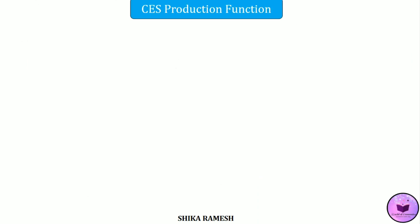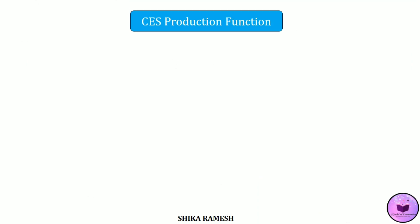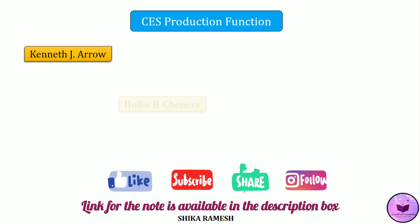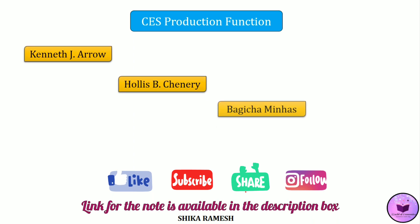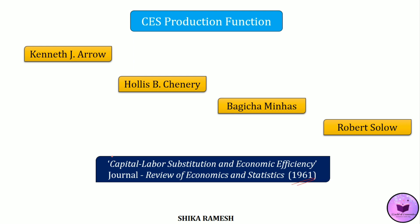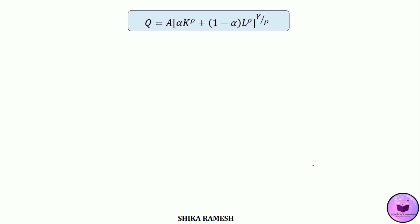The Constant Elasticity of Substitution, or CES Production Function, was put forward by Kenneth J. Arrow, Halls B. Chenery, Bagicha Minhas, and Robert Solow in 1961 in their famous paper 'Capital Labour Substitution and Economic Efficiency.' The general form of a CES Production Function can be expressed as Q = A × (α·K^ρ + (1−α)·L^ρ)^(γ/ρ).